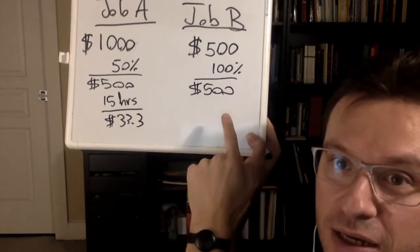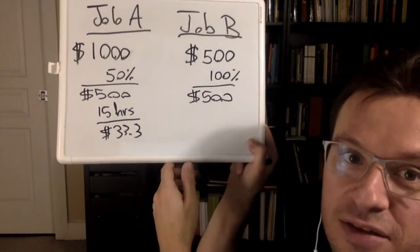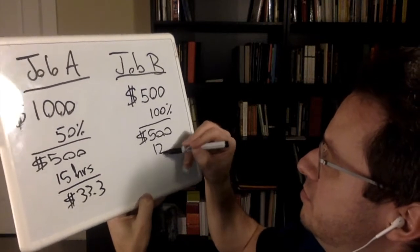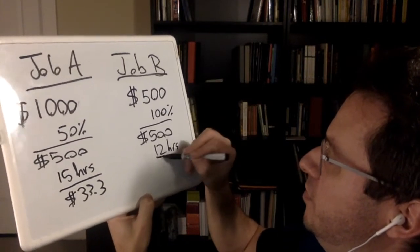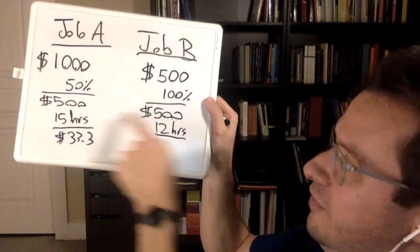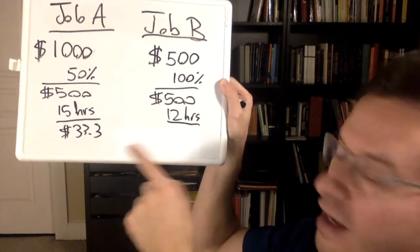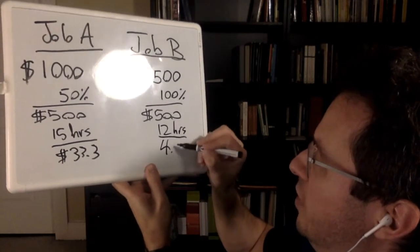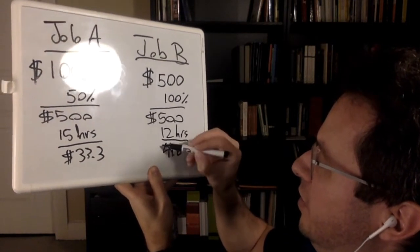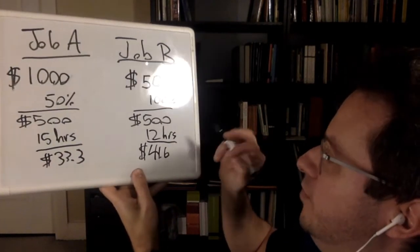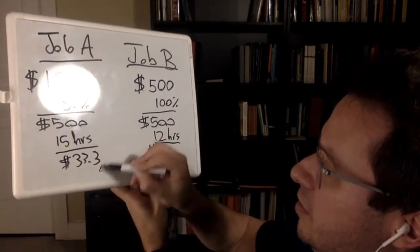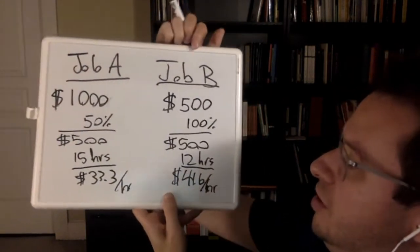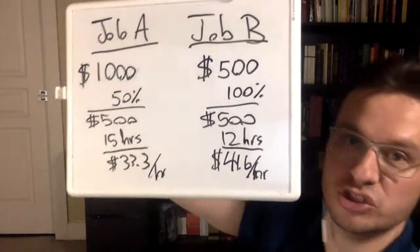Job B takes about 12 hours to finish. So with the same expected value of $500, Job B works out to about $41.60 per hour. This means you should be going for Job B.